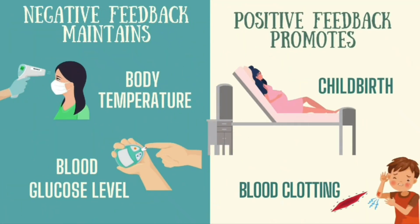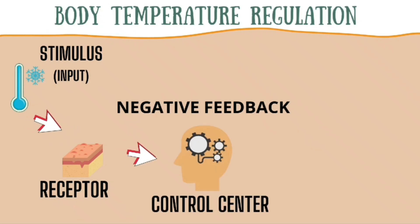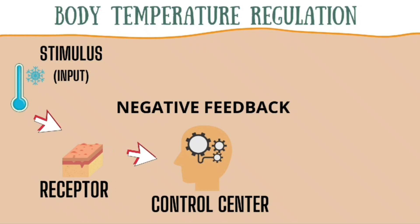We are going to give examples of how negative feedback and positive feedback maintain balance, or homeostasis, in our system. When the stimulus of a drop in temperature is detected by your receptors, it sends a message to the hypothalamus, which is the control center for thermoregulation. The message from the receptors is interpreted by the hypothalamus and then sent to the appropriate effectors.